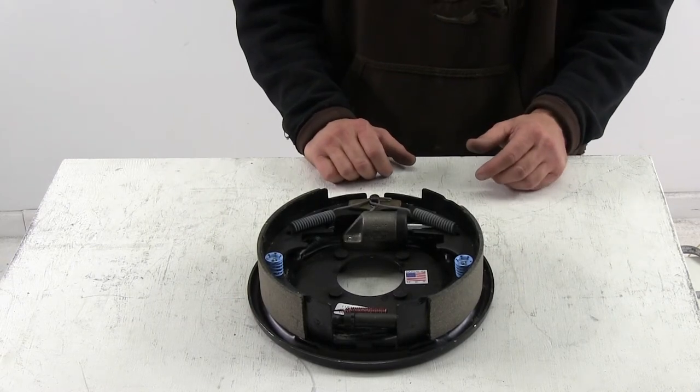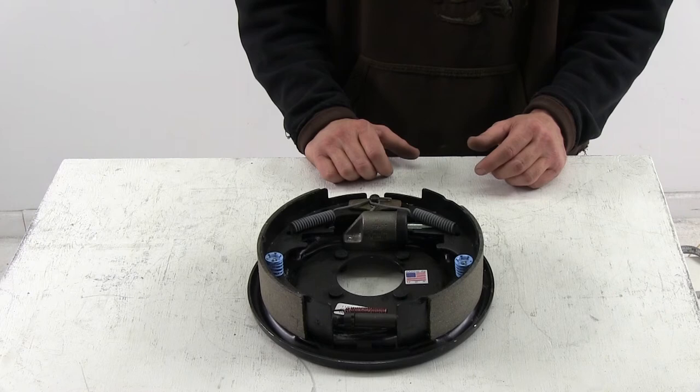And there you have it for our hydraulic brake assembly from Dexter, part number 23-313.